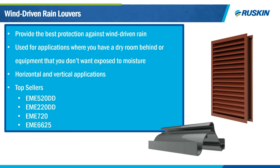Wind-driven rain louvers are available in both horizontal and vertical configurations with closer blade spacing, meaning they typically won't have the higher free areas of standard stationary louvers. Our top sellers are our 5-inch EME 520DD, our 2-inch EME 220DD — best in class for all thin line louvers — our 7-inch EME 720, and our vertical 6-inch EME 6625. The 520DD and 220DD typically sell the most but cap out at about 47% free area for the 5-inch. The EME 720 stands out by offering up to 56% free area, which most wind-driven rain louvers cannot offer.